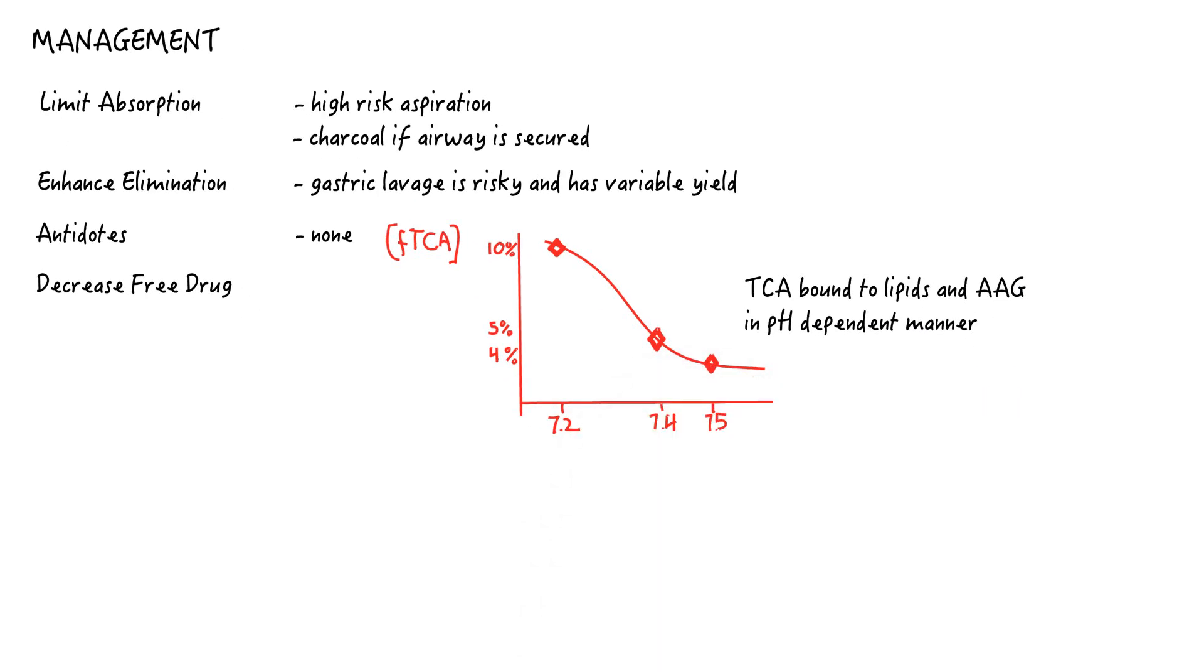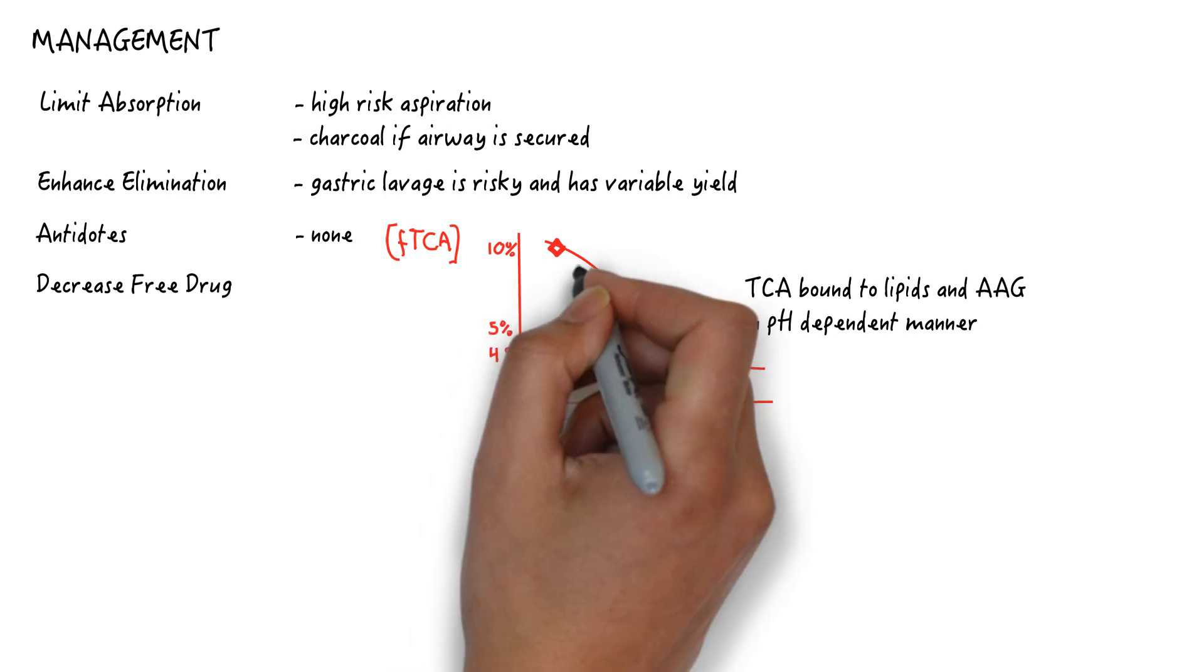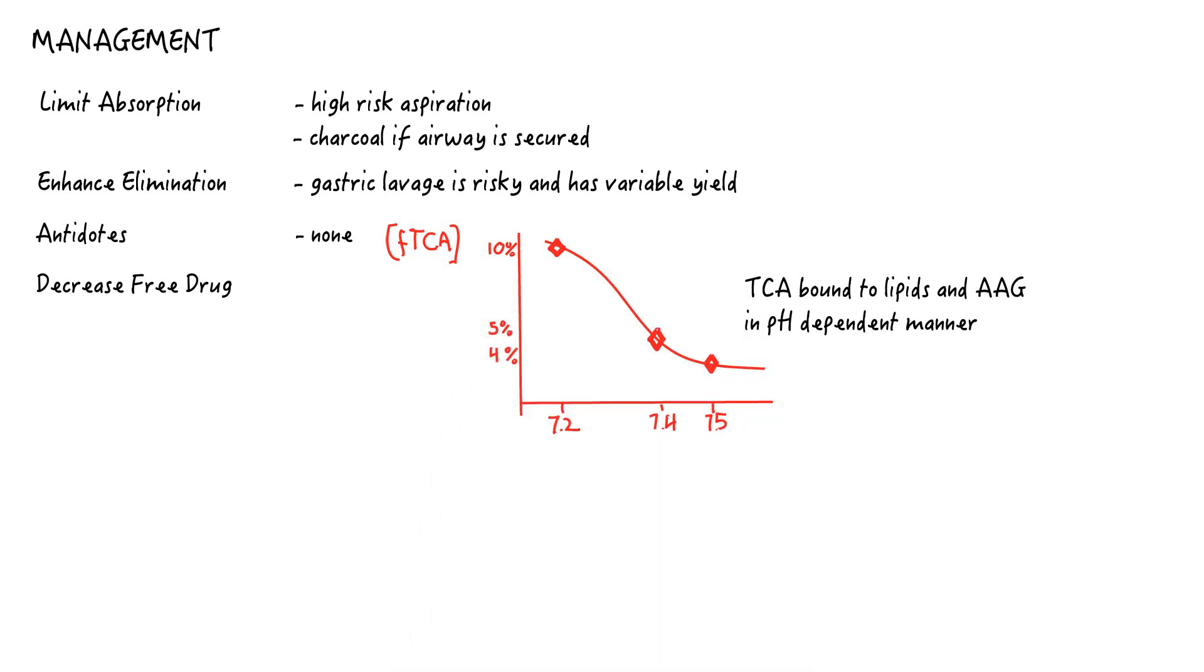At a normal pH of 7.4, only 5% of TCA exists in the free drug. This can double to 10% at a pH of 7.2, and decreases marginally with alkalinization.